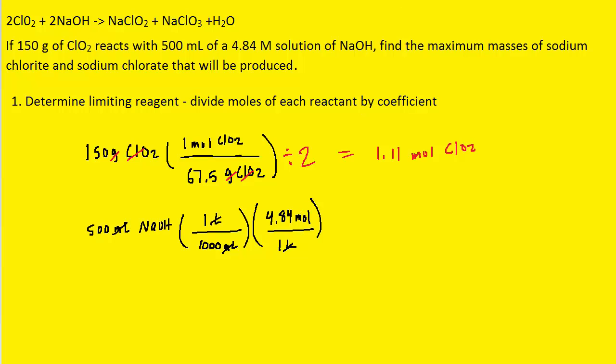Then again, we want to divide by the coefficient. The coefficient for sodium hydroxide is also a two. When you work that out, you're going to get 1.21 for the sodium hydroxide.